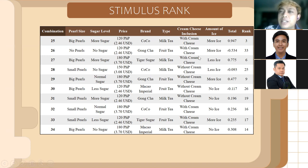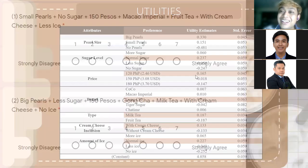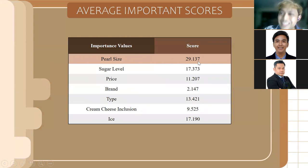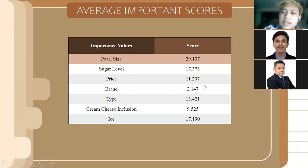Looking at the utility estimates: big pearls have a utility of +0.330, small pearls +0.151, and no pearls is a large negative value of -0.481. People like normal sugar. The cheaper the price, the better. People like Gong Cha for brand, but only by 0.0118 — very small compared to the pearl effect. People prefer milk tea type, like cream cheese inclusion, and normal ice.